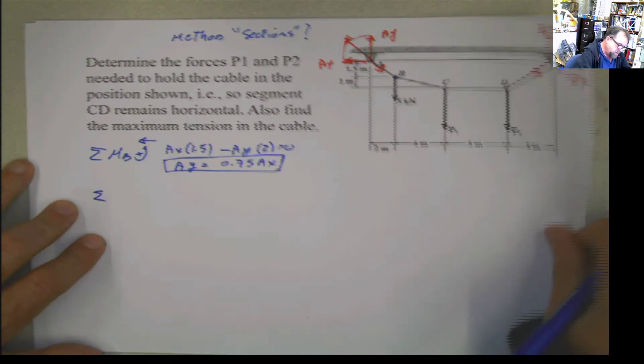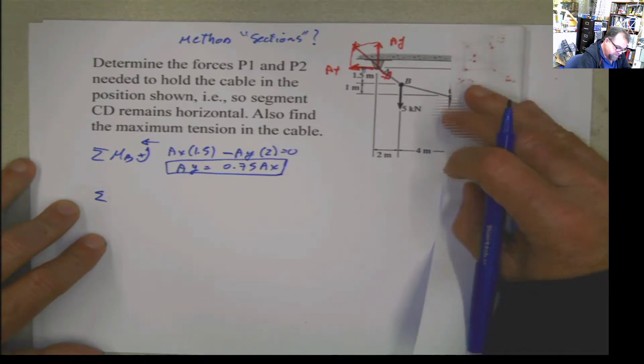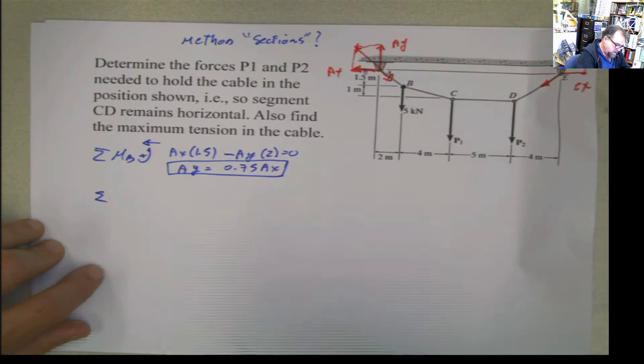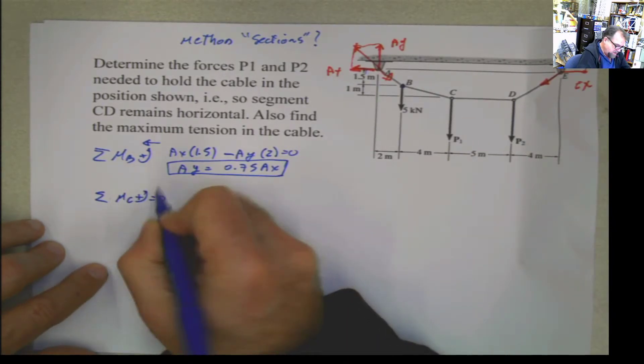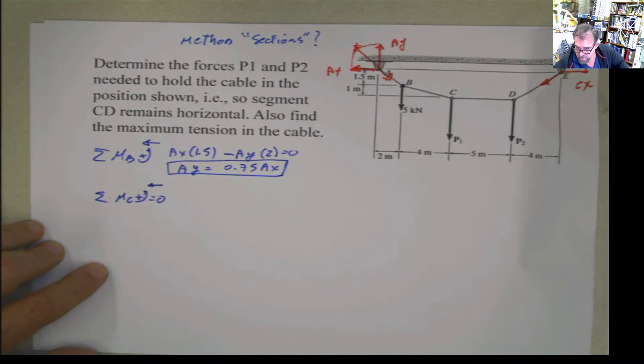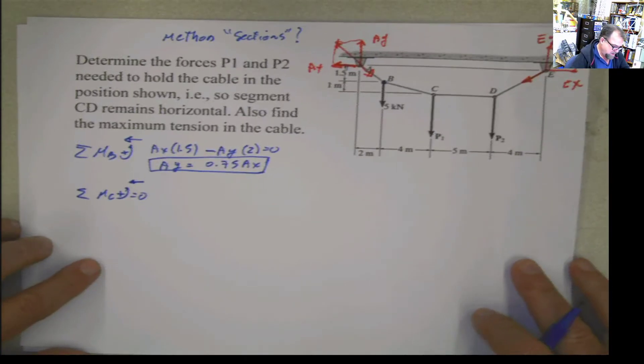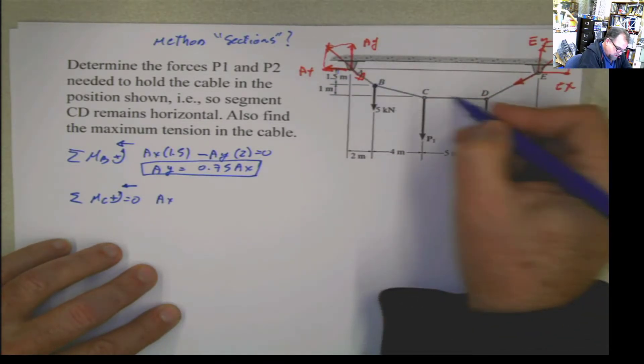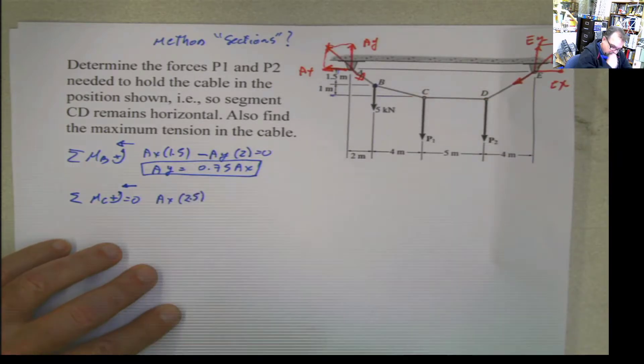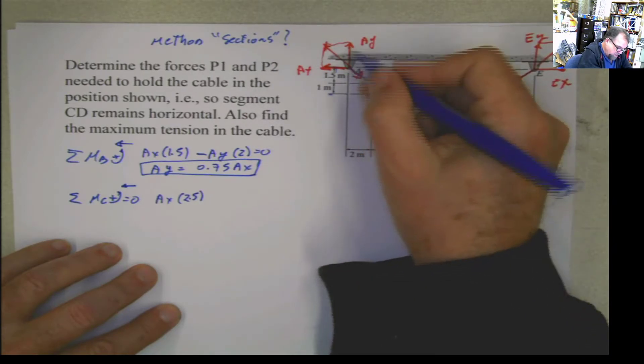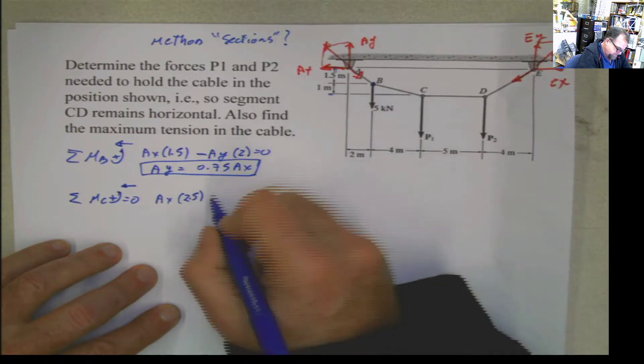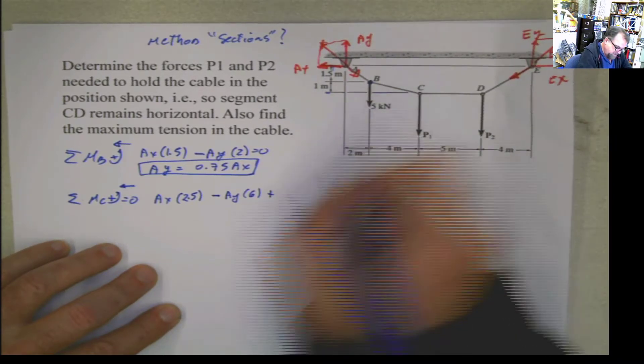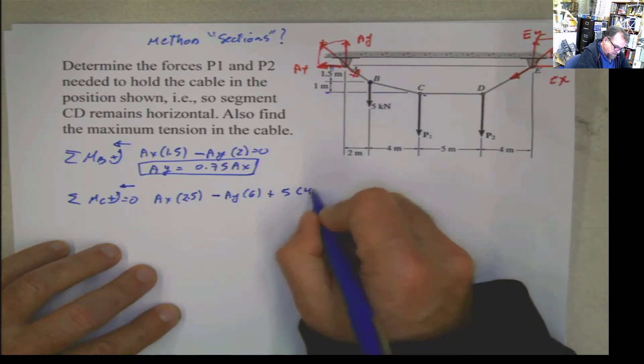Now I'm going to do the same thing, but instead of applying the moment at B, I'm applying the moment at C. So summation of moments at C equals 0, using this side of the structure. It's going to be AX multiplied by the distance from here to C, 2.5, and that's going to be positive. Now I have AY, multiplied by this distance, which is 6, negative. And then I have this 5 here, plus the force is 5 multiplied by this distance, which is 4, equals 0.